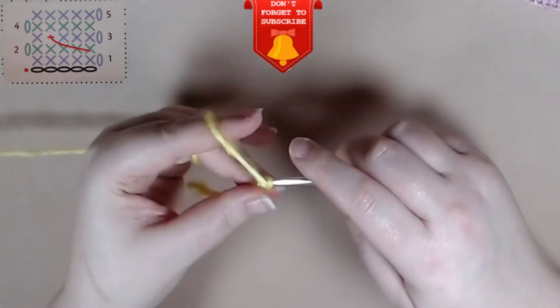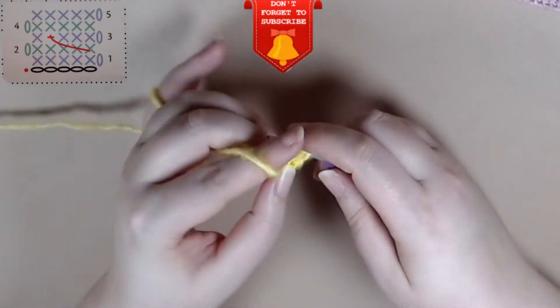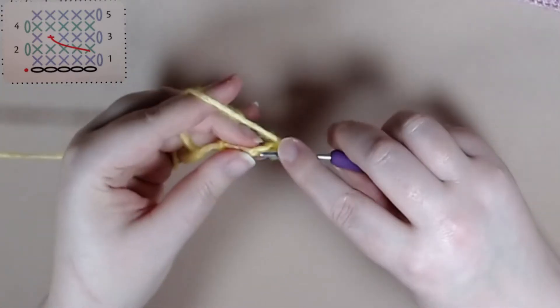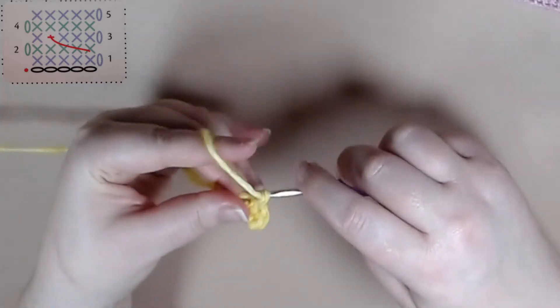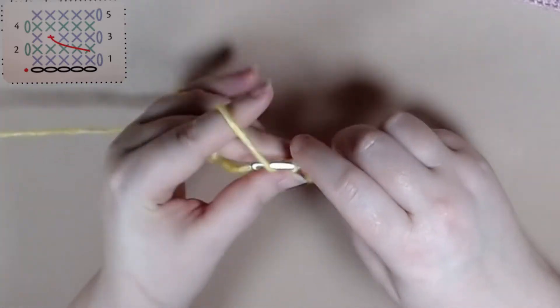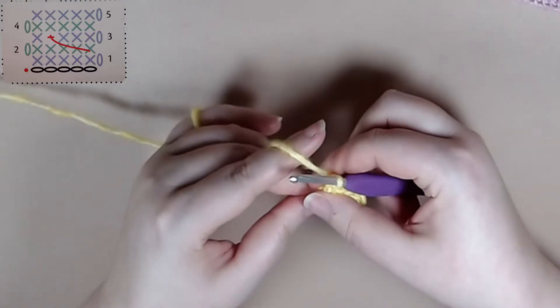So for row one you just want to chain one and single crochet all the way across to the end of the row. Super easy.